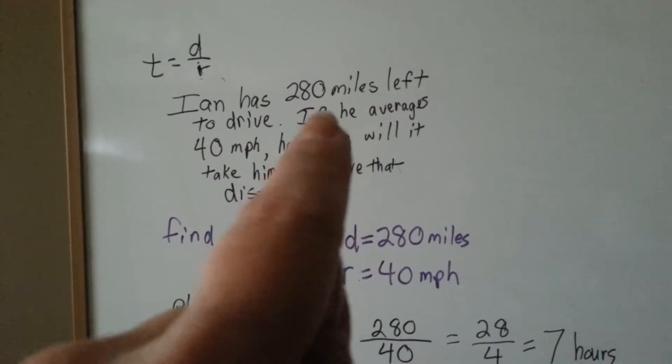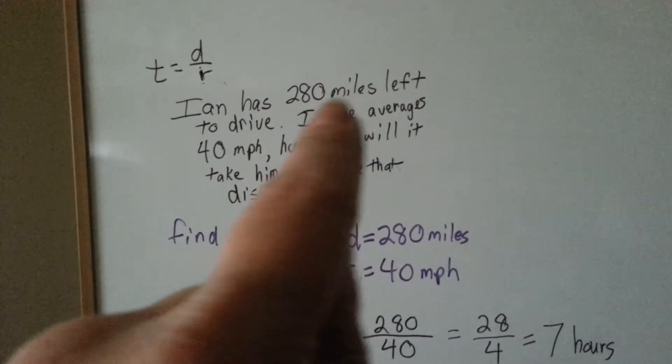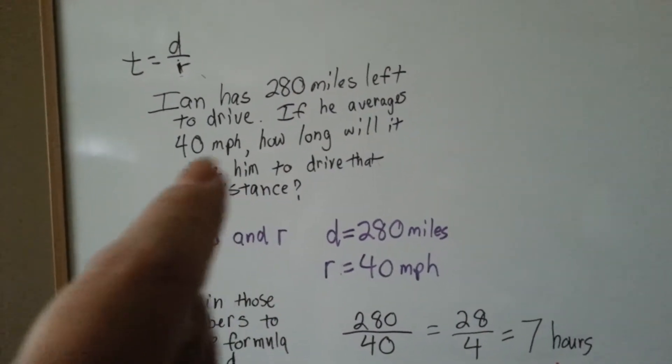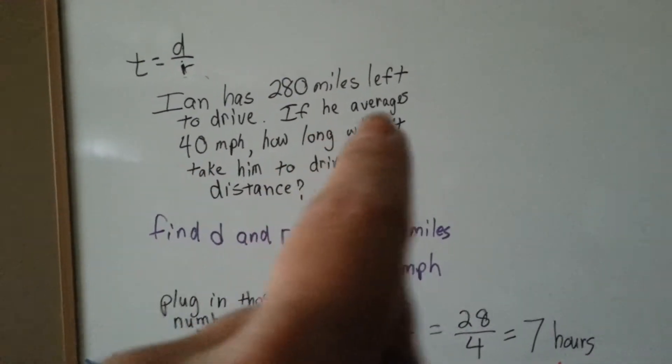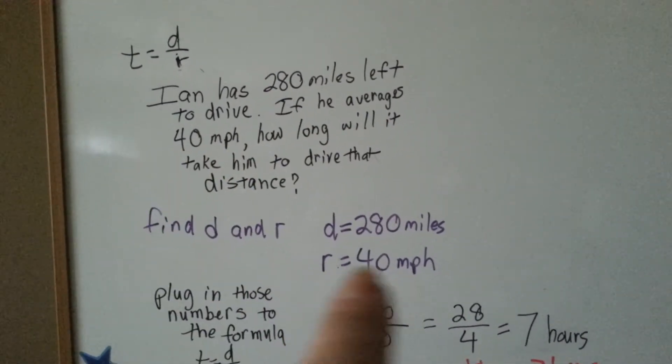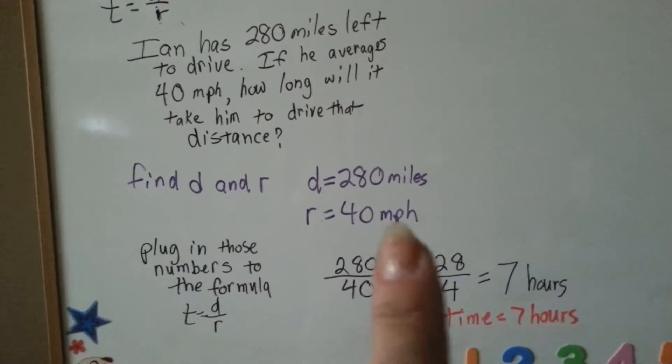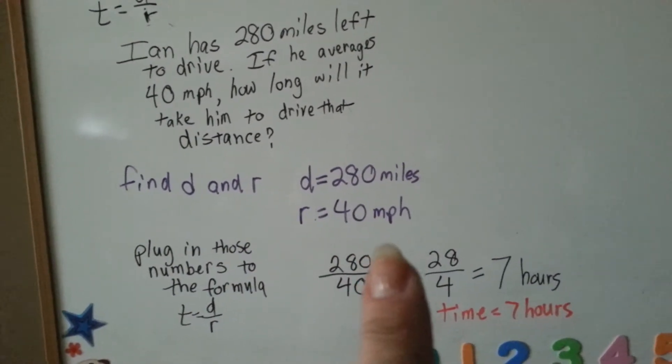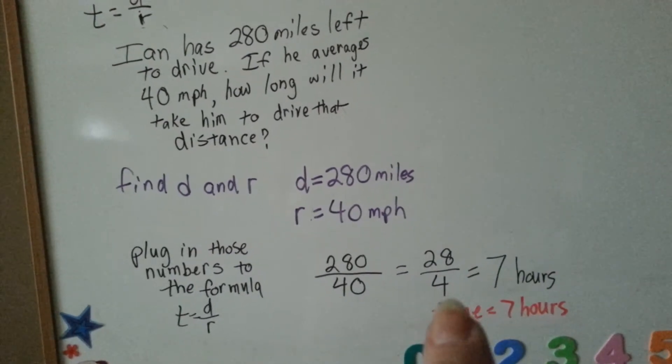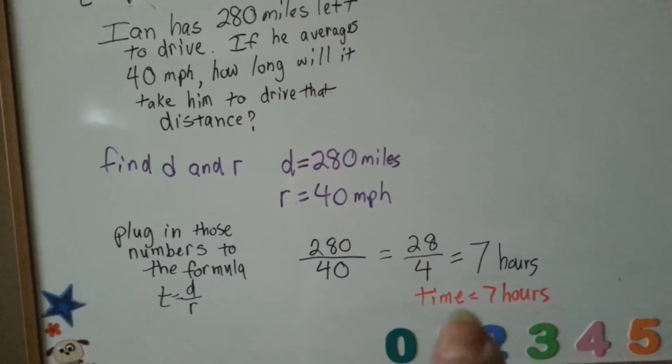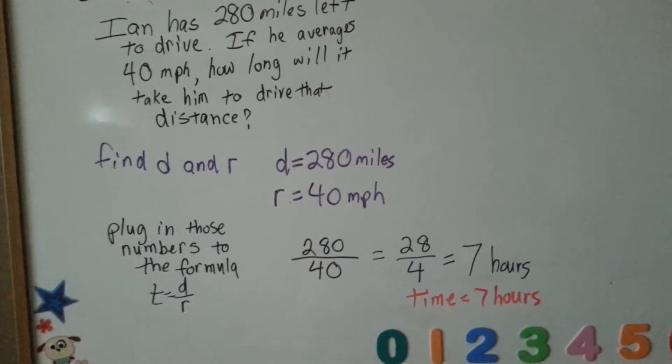The R, the rate, is 40 miles per hour that he is averaging for his rate of speed. So now we're going to divide these. All we have to do is take the zeros off and we get 28 over 4. And if you know your times table, you know that 7 times 4 is 28. So the time is 7 hours.